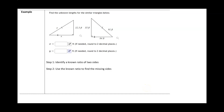Knowing this, let's find the unknown lengths for the similar triangles below. The first thing is we have to start with a known ratio — a ratio of two sides that we know. We know these two sides: 52.5 and 35. So I have 52.5 over 35 as my known ratio.